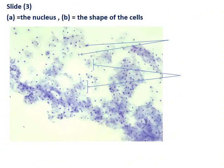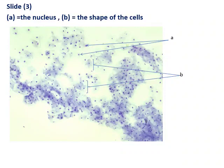This slide also shows the whole shape of the cell of simple squamous epithelial tissue, where A refers to the nucleus while B refers to the shape of the cell. The nucleus is very small and situated in the center of the cell.